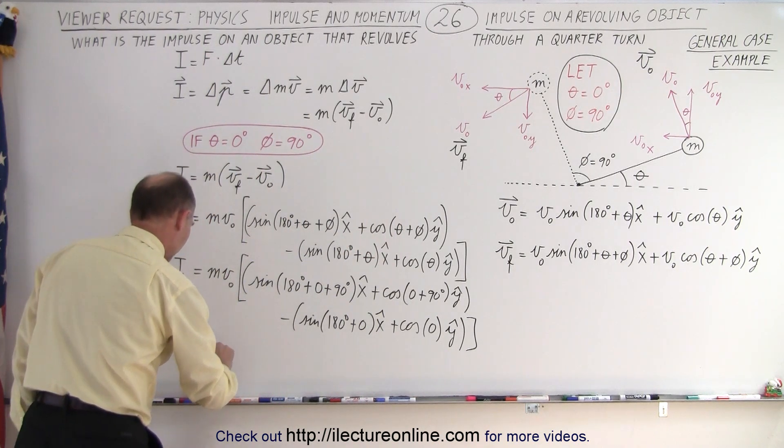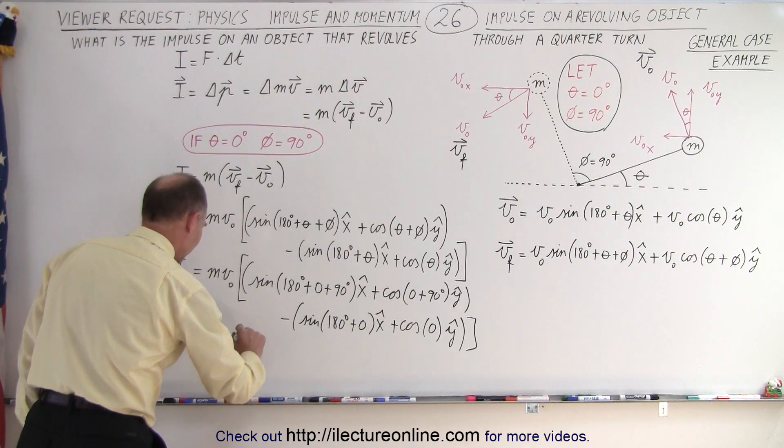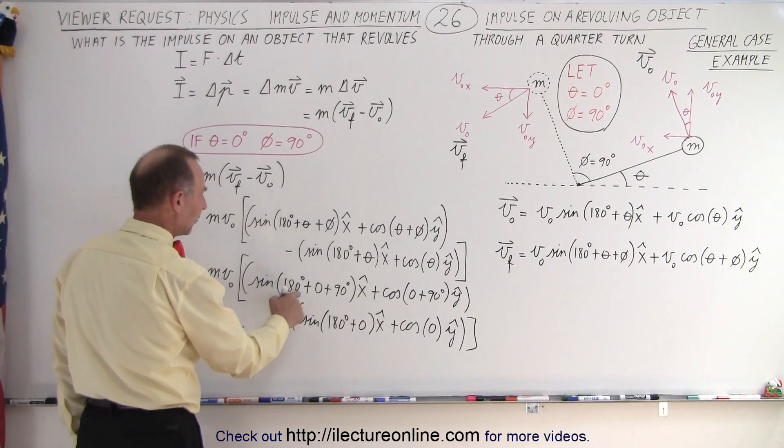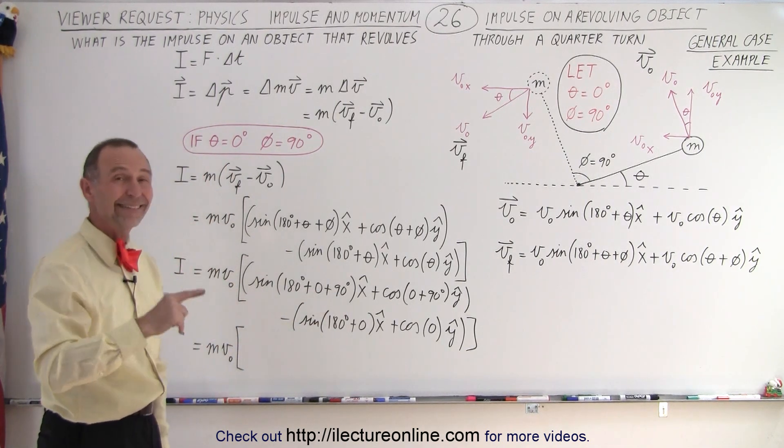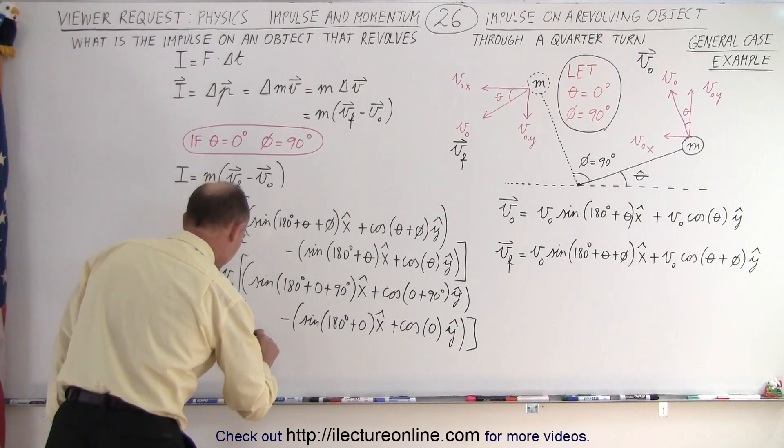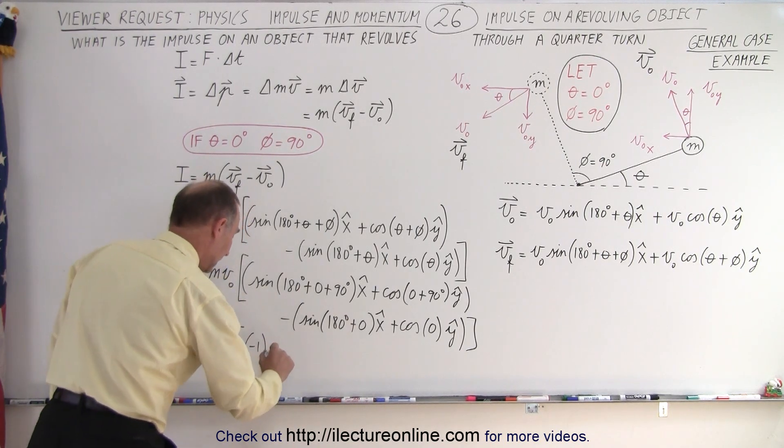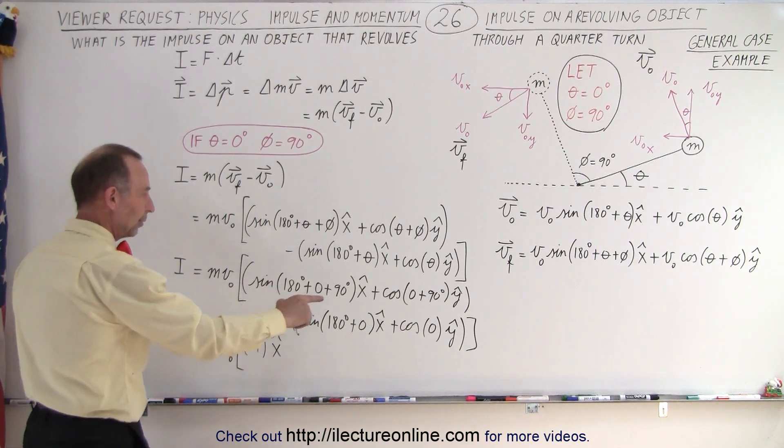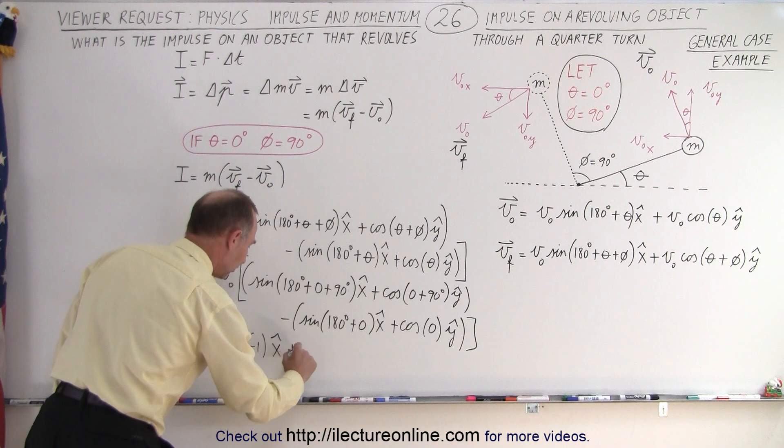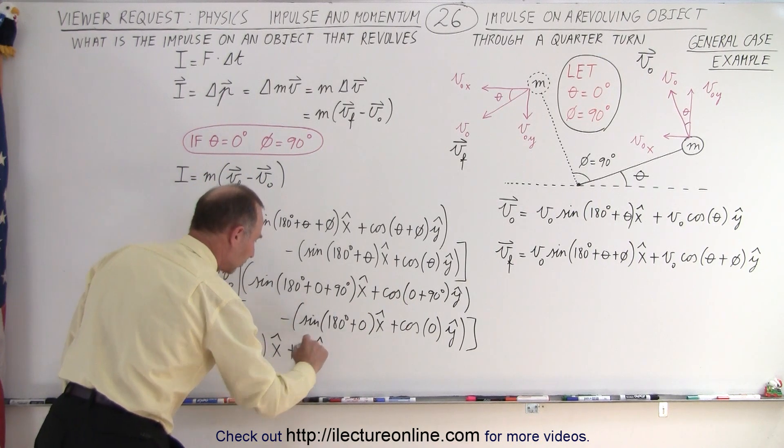So the momentum is going to be m times v sub naught times the sine of 180 plus 90 is 270. The sine of 270 is negative 1. So it would be negative 1 in the x direction. The cosine of 90 degrees is 0,